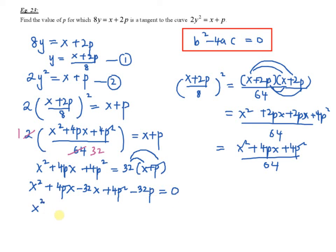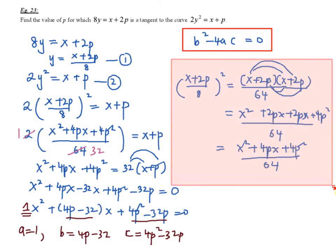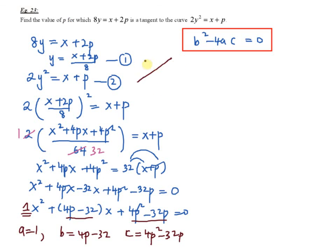Now group all the terms together. The coefficient of x squared is 1 (a equals 1), the coefficient of x is (4p minus 32) which is b, and the constant is (4p squared minus 32p) which is c. Since this is a tangent to the curve — touching at only one point — apply b squared minus 4ac equals 0. So (4p minus 32) squared minus 4 times 1 times (4p squared minus 32p) equals 0.